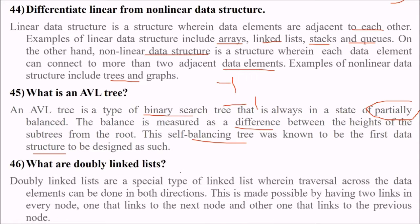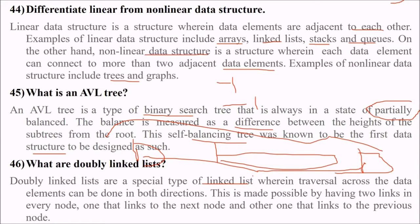What are doubly linked lists? These are again a special type of linked list wherein traversal across the data elements can be done in both directions. These are the nodes of a linked list - you can travel this way or that way. This is made possible by having two links, because this will contain the address of the previous one and the address of the next one.